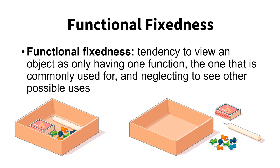There are many examples where we assume we should only use things for the function they're supposed to be used for, and we have to step outside the box to use them for other functions. For example, if someone brings wine to a party but nobody brought a corkscrew, you have to find another way to open the bottle — maybe using a knife as a lever to pull the cork out, or a screwdriver. Finding those alternative uses for objects is overcoming functional fixedness.